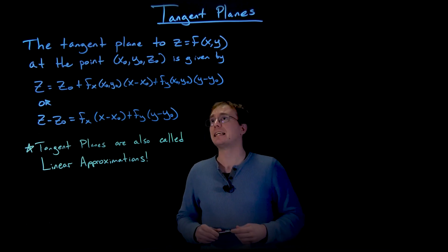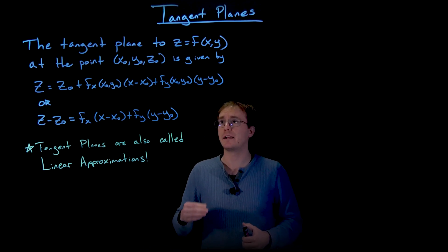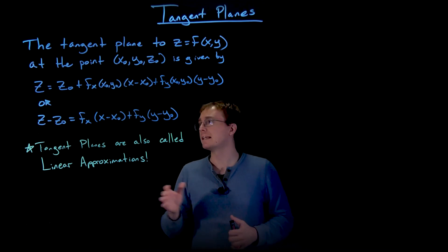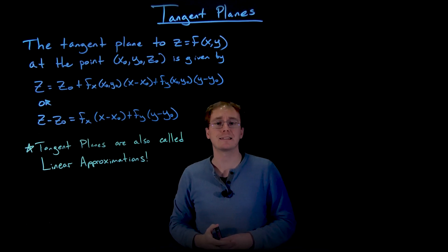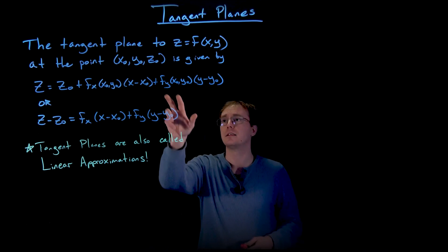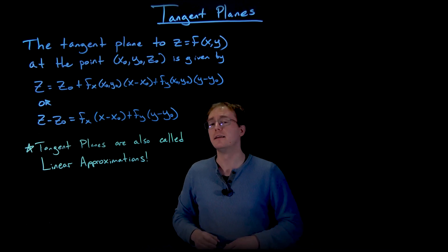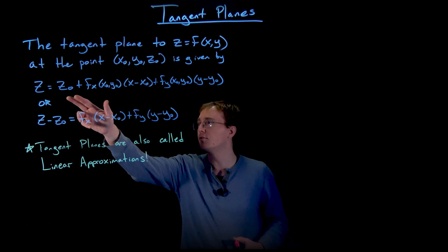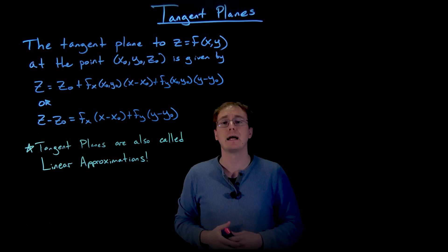Remember, if we have a tangent plane to a surface given by z equal to a function of x and y at some given point (x naught, y naught, z naught), then we can write the tangent plane as z equals z naught plus the partial derivative of our function with respect to x at our point of interest multiplied by (x minus x naught), plus the partial derivative evaluated at the point of interest times (y minus y naught). A convenient rewrite is to move z naught to the left-hand side, giving us z minus z naught on that side.